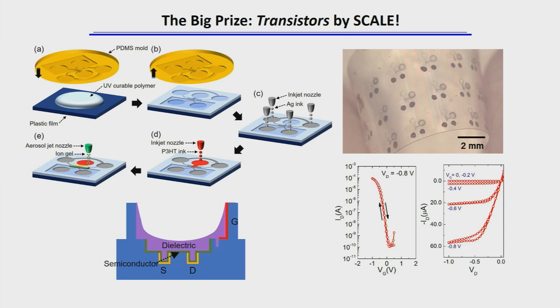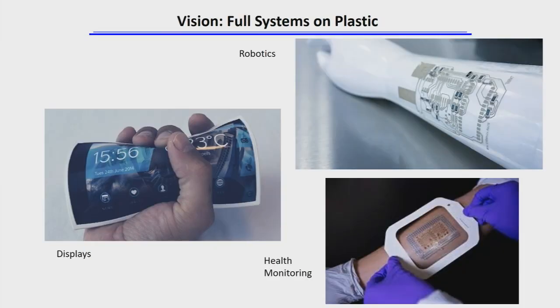So with these building blocks now, we can start to think about where are we going? What kind of systems do we want to make? It could be electronic e-skins for robots. It could be displays. It could be various kinds of health monitoring devices. That's where we're headed in the future.